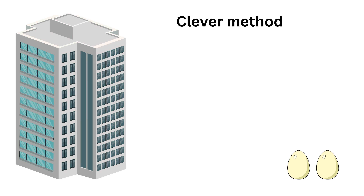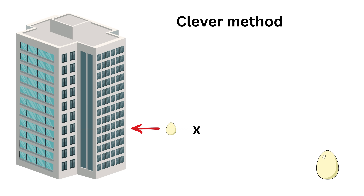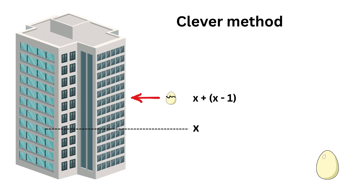And the answer is yes. Here's the most clever idea. Suppose you first drop the egg from some floor X. If it breaks, we try the remaining X minus one floors one by one. So in the worst case, we make X trials. If the egg doesn't break, we next jump X minus one floors, because we already used up one drop, and we want to make sure the total number of drops never goes beyond X. So each new jump is one floor less than the previous. So now the floor we try is X plus X minus one. If the egg breaks here, we only need to check the floors between the previous safe floor and this one — that is, X minus one more drops at most.